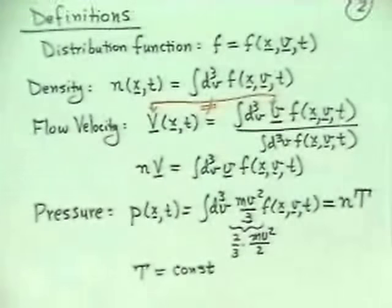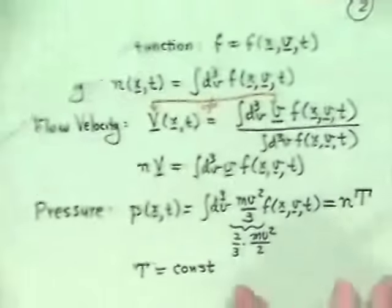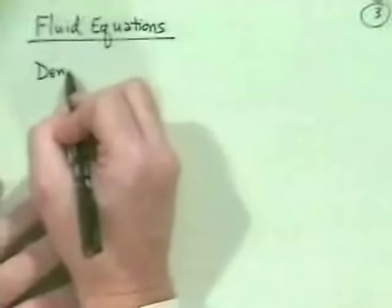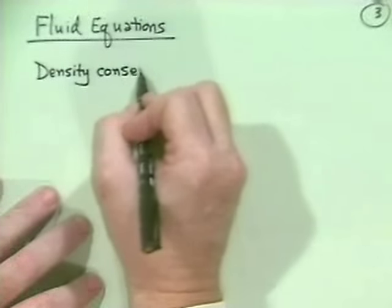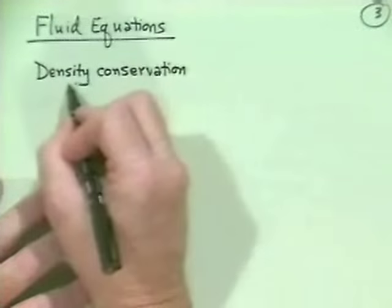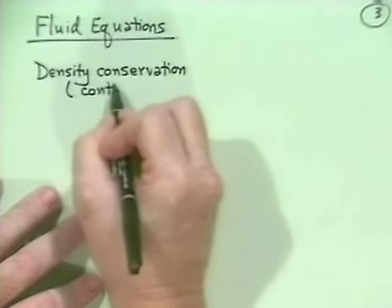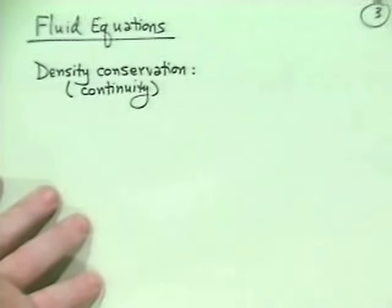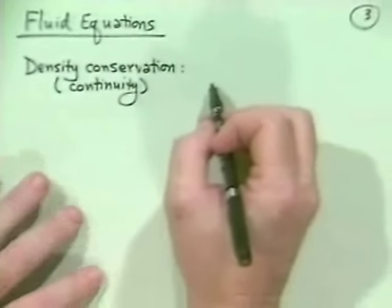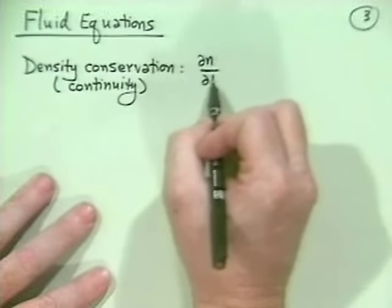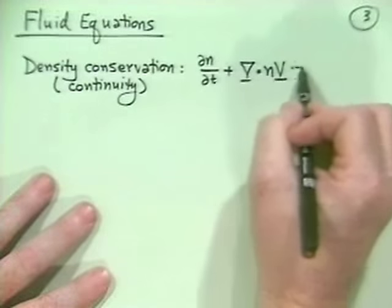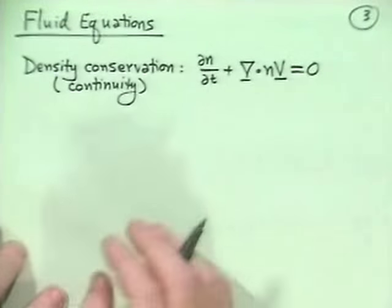Those are our definitions. Next, let's write down the fluid equations and discuss them. They're relatively normal fluid equations. The first one is called density conservation, or the continuity equation: ∂n/∂t + ∇·(nV) = 0.